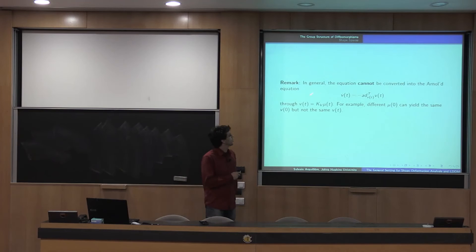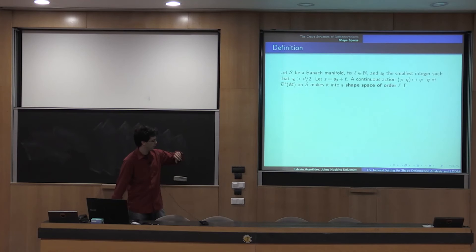All right, so just as a remark, because of the fact that we're in sub-Riemannian geometry, we can't translate this equation into an equation on the vector field itself, as you would do, for example, for the Euler equation of fluid mechanics or something. Because you actually have some times where you can have different value of the initial momentum, which is the same value of the initial vector field, but such that actually the vector fields go apart from one another. So you can actually have geodesics that have the same initial velocity, but which are different.